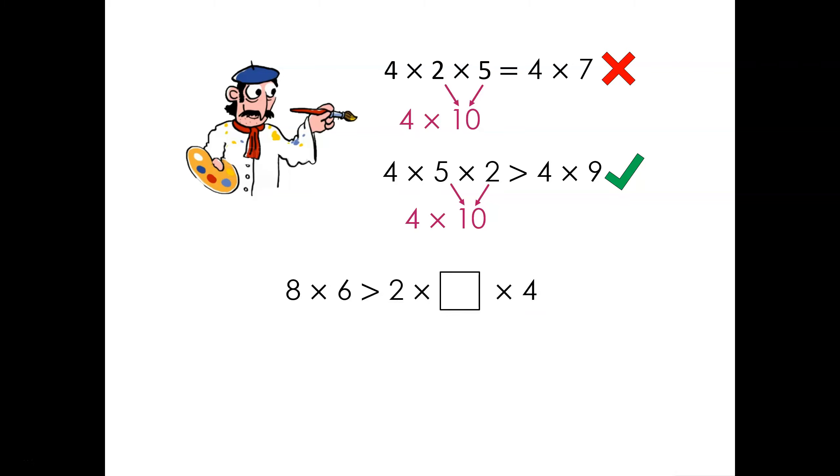Here we have another comparison number sentence. It shows that 8 × 6 is greater than 2 × a missing number × 4. What missing numbers could go in the missing box? Pause the video and have a think. Well, how do you think you got on? We can multiply the two and four together because we can multiply the three numbers in any order thanks to multiplication being commutative. So now that we have multiplied two and four, we've got eight. 8 × 6 is greater than 8 × our missing number. So six has got to be greater than our missing number. This means our missing number could be 5, 4, 3, 2, 1, or zero.